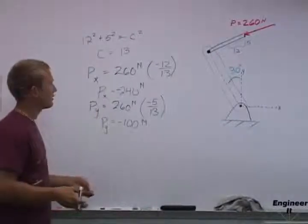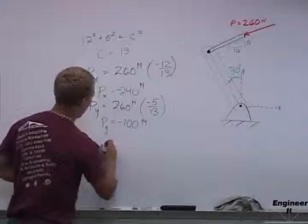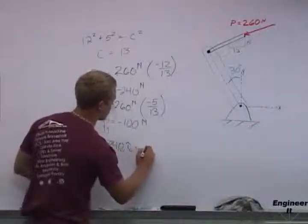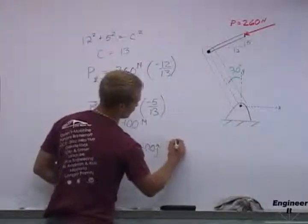We can also take this another step and write this in vector notation as negative 240 i minus 100 j. And this is all in newtons. Thank you very much.